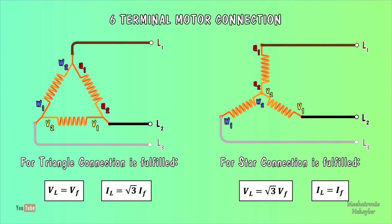In a six-terminal induction electric motor, two types of connections can be made. It can be a triangle, or as it can also be a star.